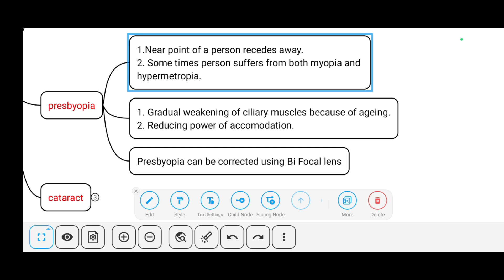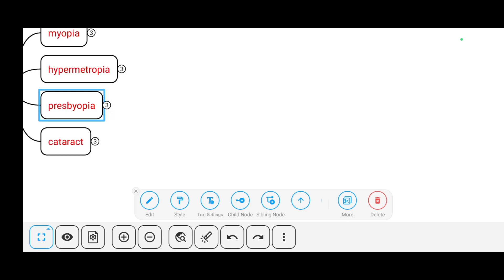What are the causes for presbyopia? Gradual weakening of ciliary muscles because of aging and reducing power of accommodation. It can be corrected using bifocal lens, which has both concave and convex components.